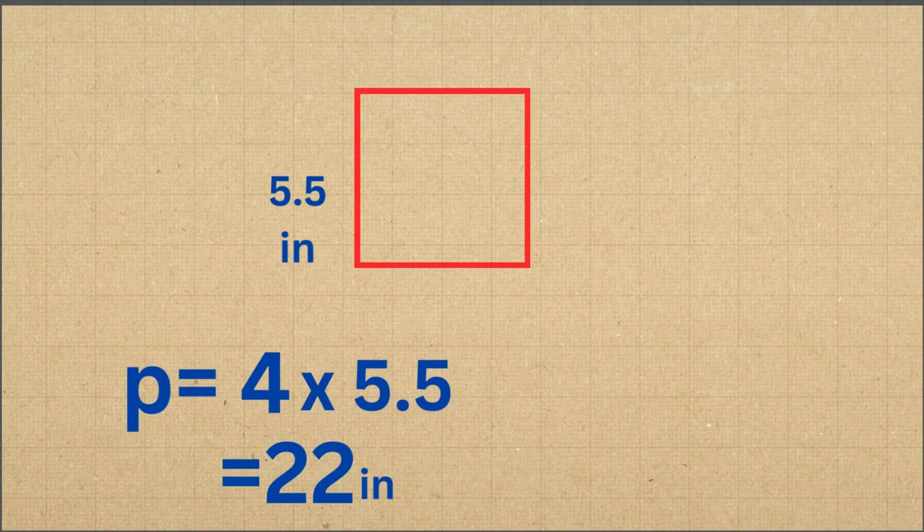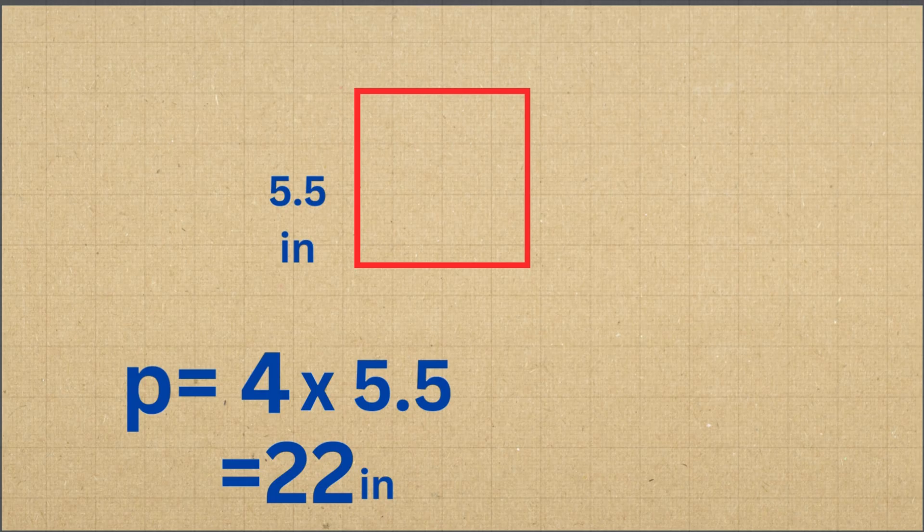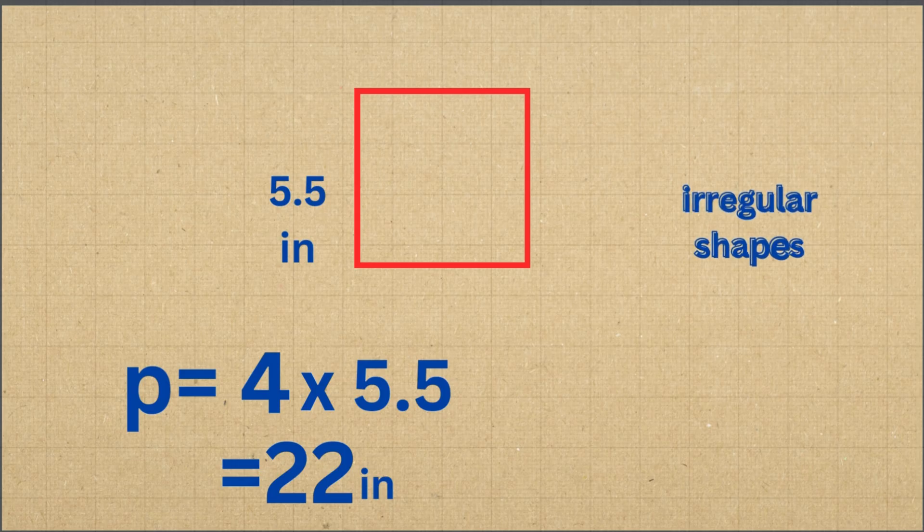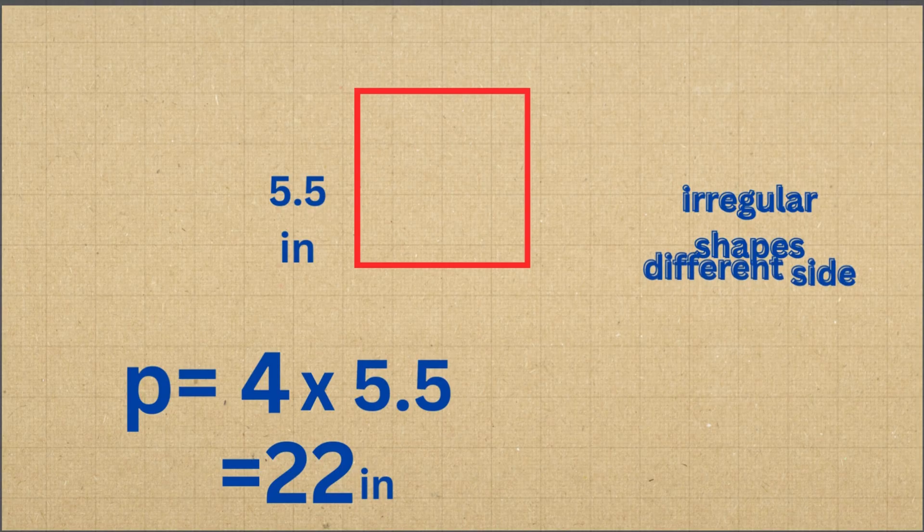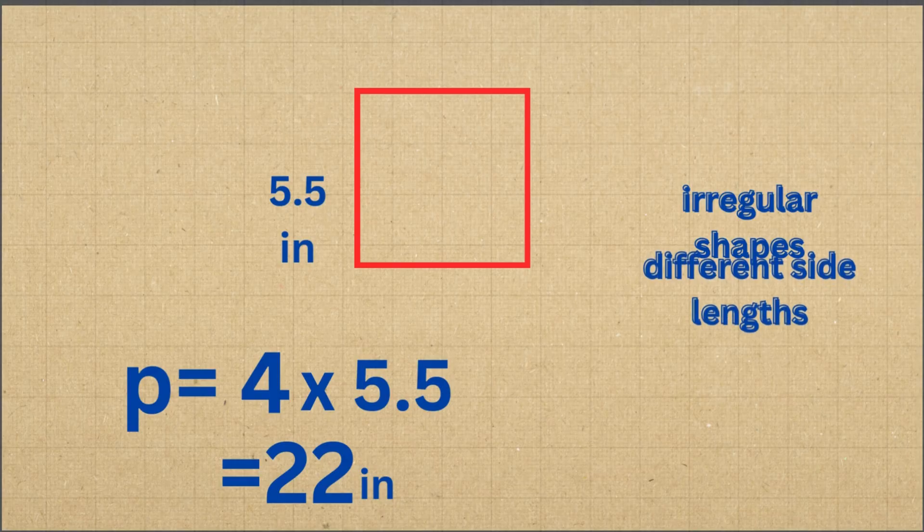Guess what, we're not stopping here. Now that we've learned how to find the perimeter of a square, it's time to take things up a notch. In the next video, we'll explore how to find the perimeter of irregular shapes. That means we'll see how to handle shapes with all sorts of different side lengths. So stay tuned, and I'll see you in the next one.